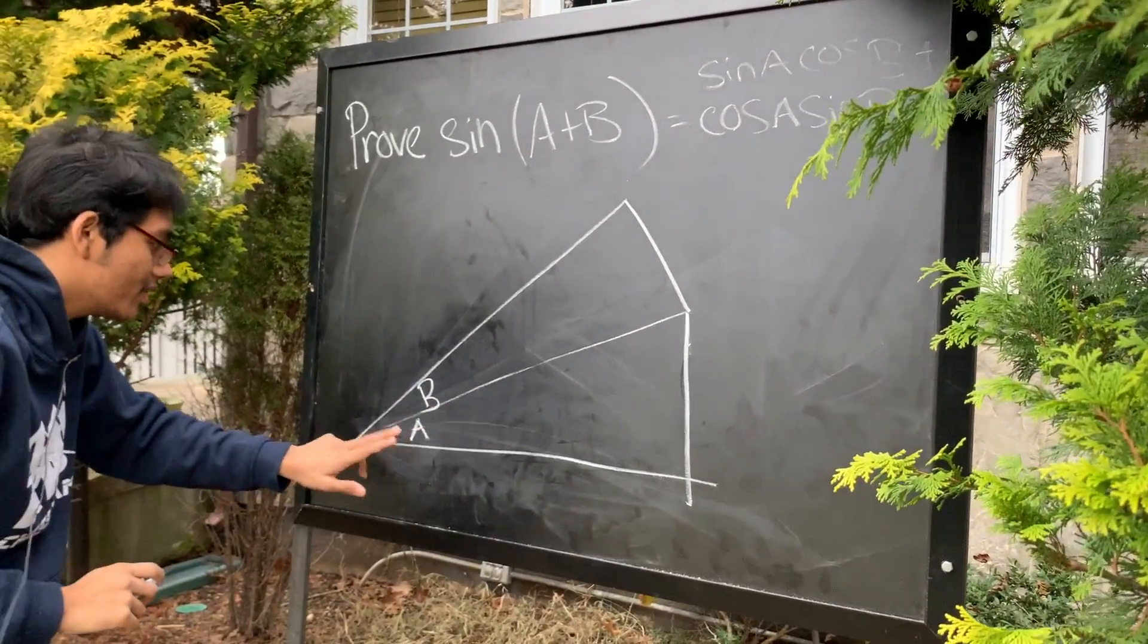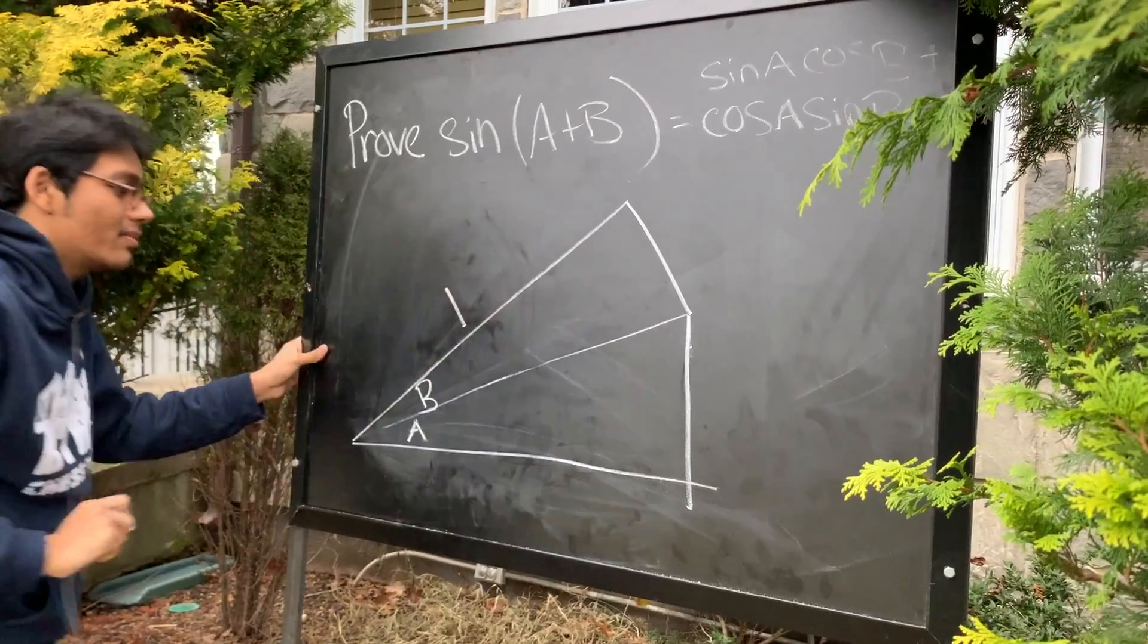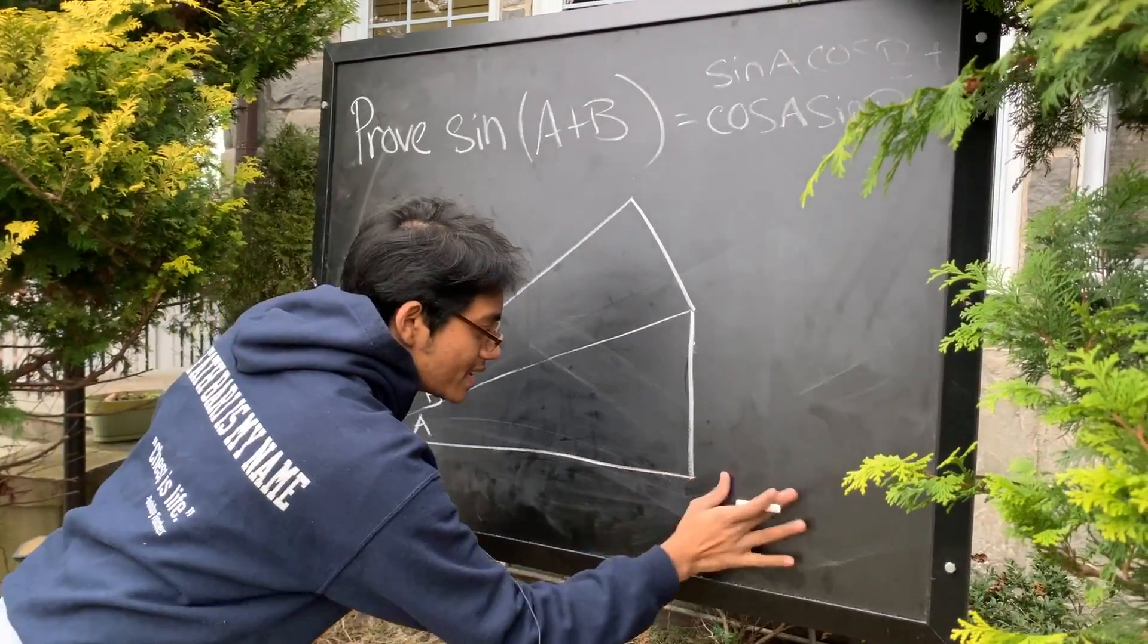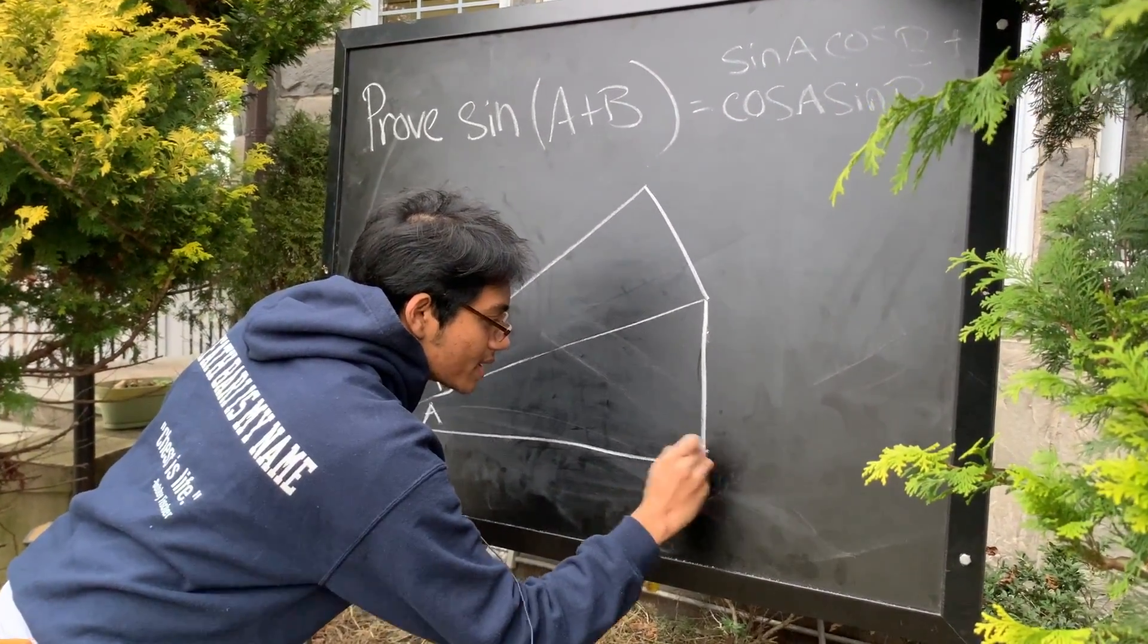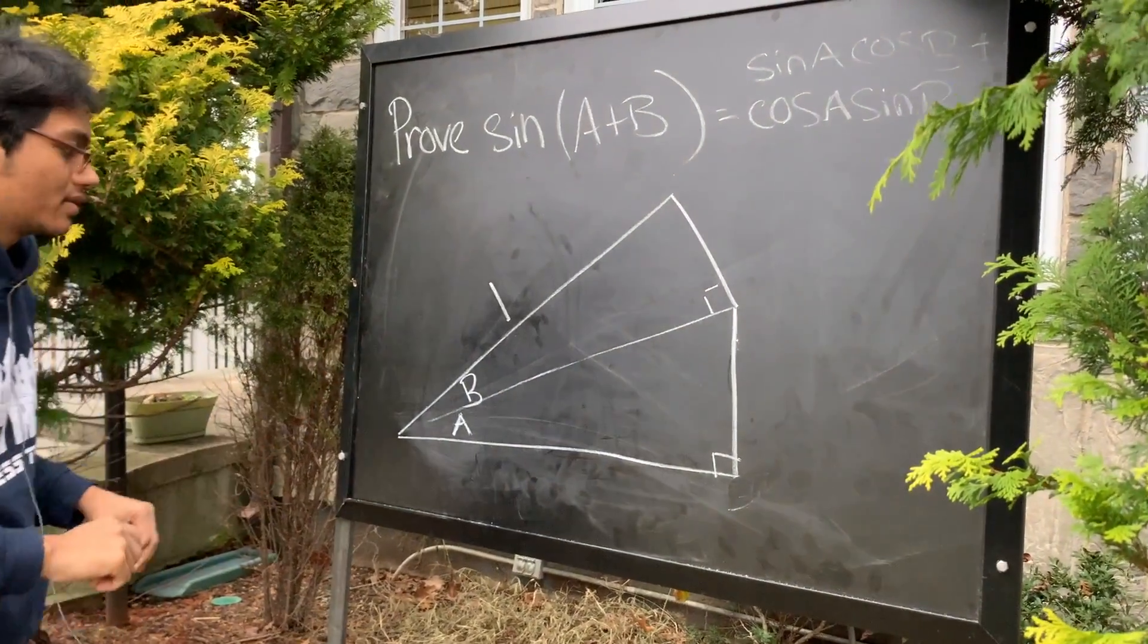So I have two angles. I have angle A, angle B, and my hypotenuse is going to be 1. And of course, these are right triangles, so let's go ahead and put the right angle marks right there.